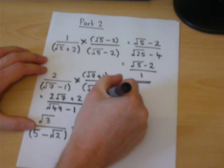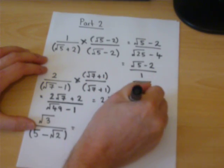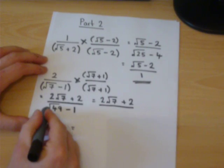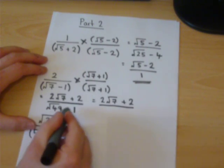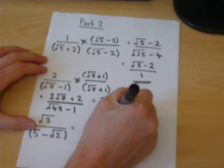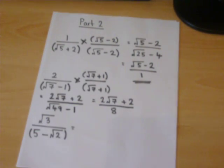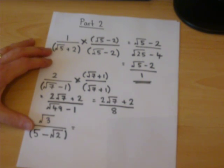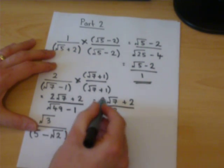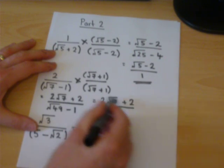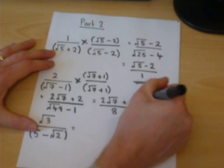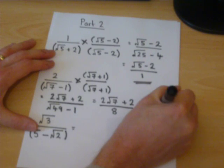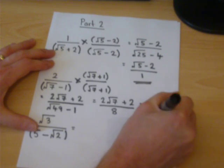Which gives us 2 root 7 plus 2. Root of 49 is 7, 7 take away 1 is 8. This goes a step further. For those who like to spot little tricks, 2 is a factor of all of that. It can be written as root 7 plus 1 over 4.